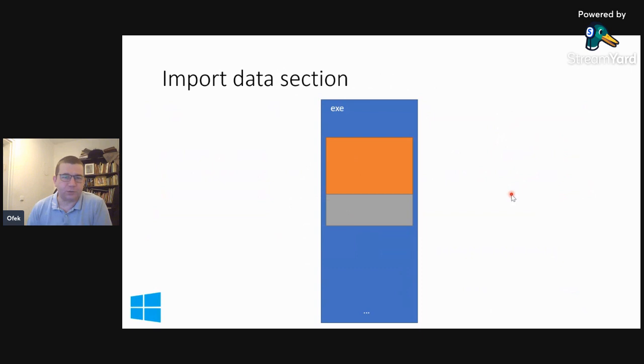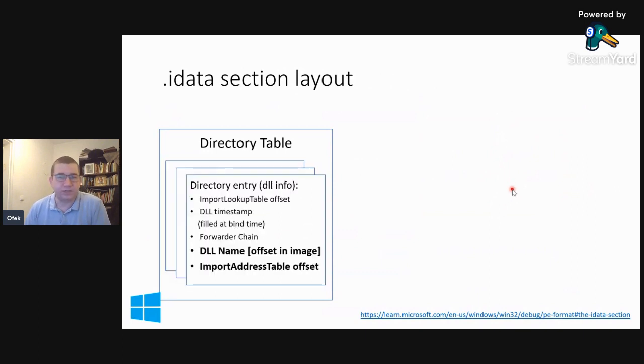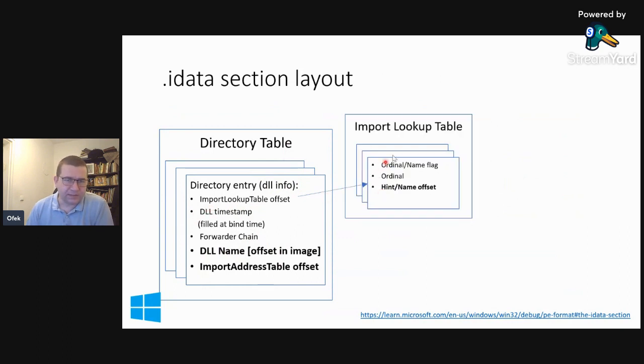Let's take a deeper dive first into Windows. A Windows executable typically contains a .idata section. This is import, the I is for import, and let's take a bit of a detailed view into its layout. The idata section contains a directory table, which is essentially a list of entries per DLL, per shared library. Each entry contains a bunch of data, but what I wanted to emphasize is it contains the DLL name and a reference to an import address table.